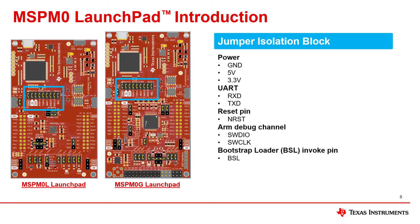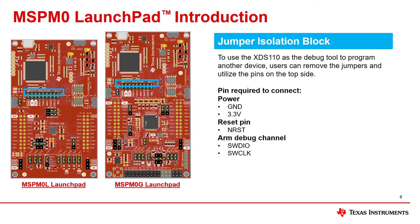The XDS 110 is isolated from the MSP M0 MCU circuit below and is connected with a set of jumpers in the middle of the board. These jumpers include the power supply, reset, ARM programming line, and BSL wake up pins. If you'd like to use the XDS 110 debugger on other MCUs, just remove the jumpers and connect the upper pins to the other MCU's interface.